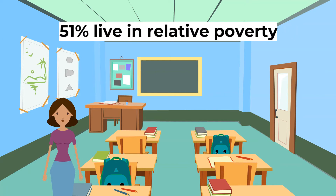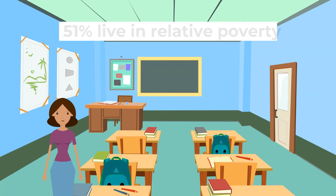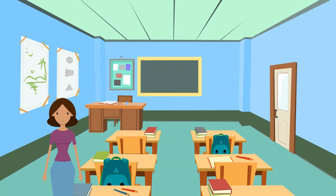51 percent of the population live in relative poverty, with 25 percent of the entire population living in extreme poverty. Extreme poverty is defined as when family income falls below one dollar and 90 cents per day.